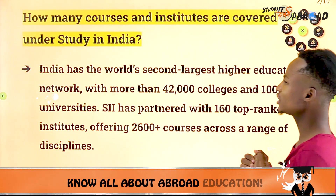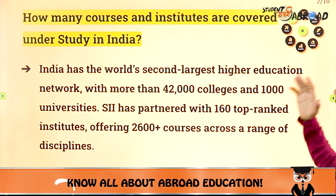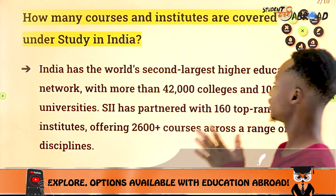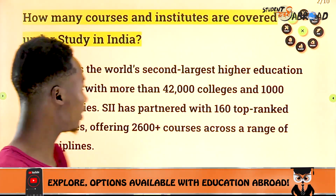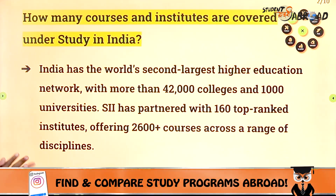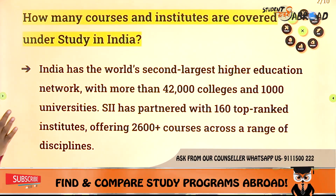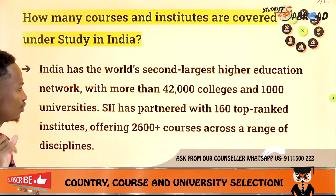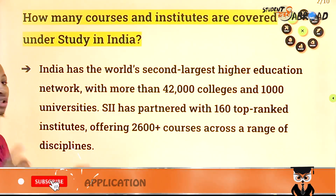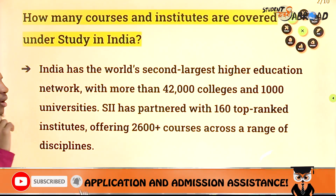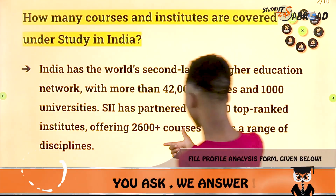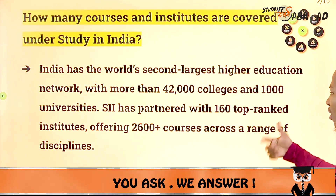The first question is: how many courses and institutes are covered under Study in India? There are a lot of courses and institutes covered under Study in India. India has the world's second largest higher education network with more than 42,000 colleges and 1,000 plus universities. The Study in India program has partnered with around 160 top-ranked institutes and is offering around 2,600 plus courses across a range of disciplines.